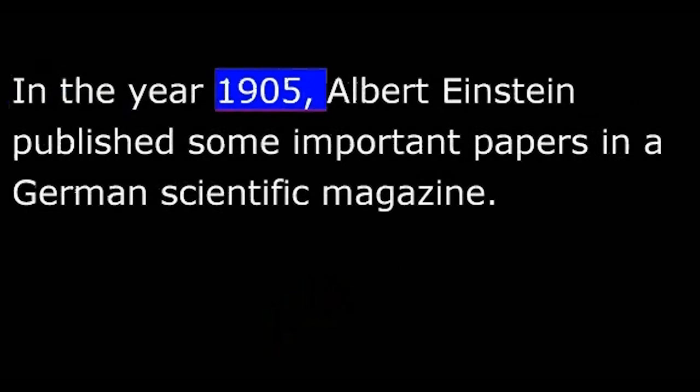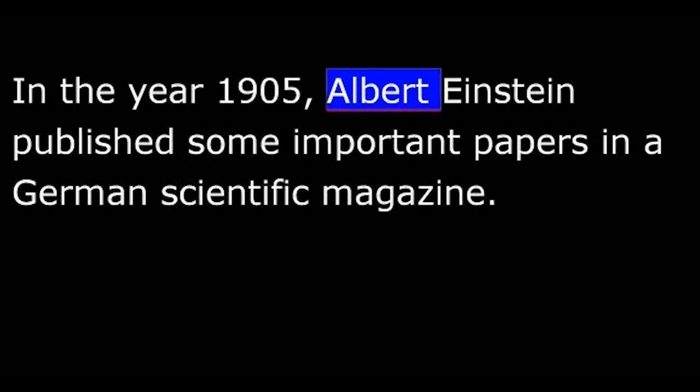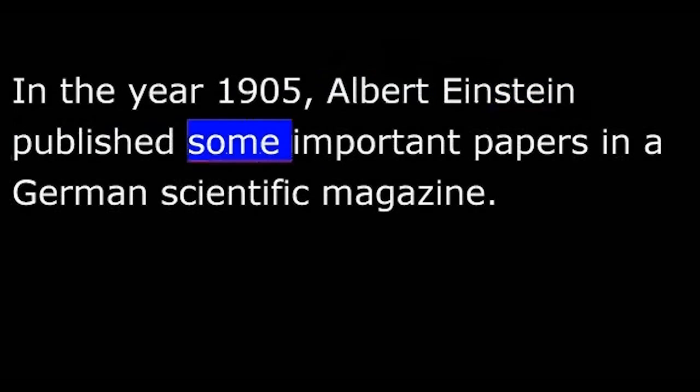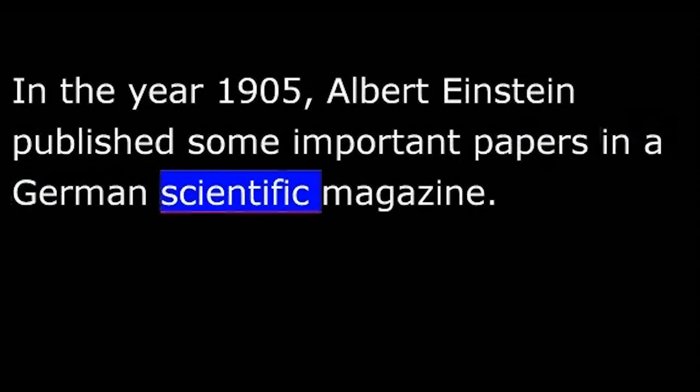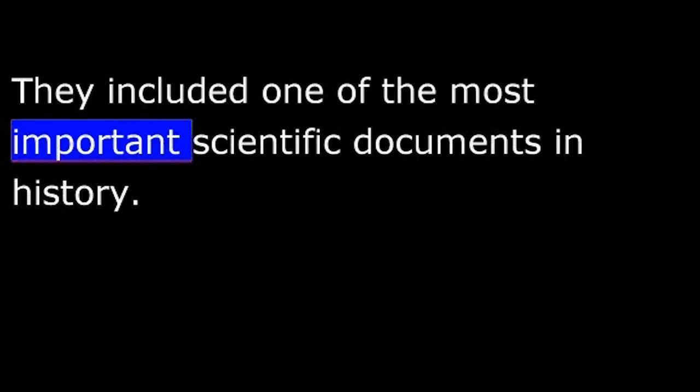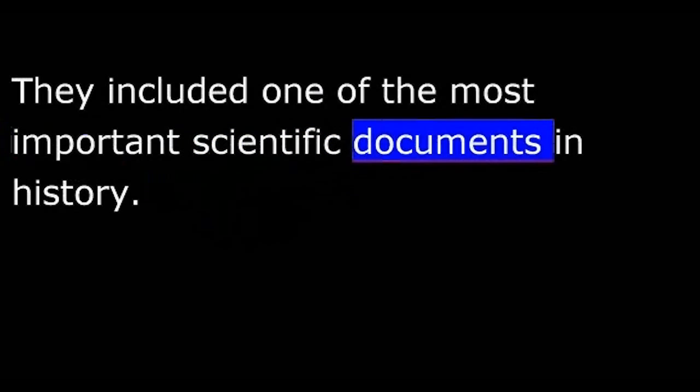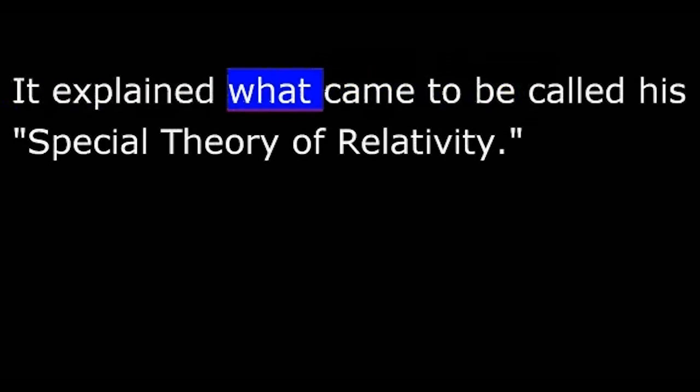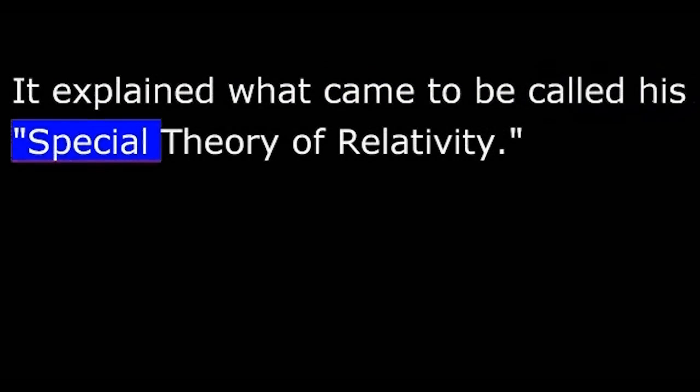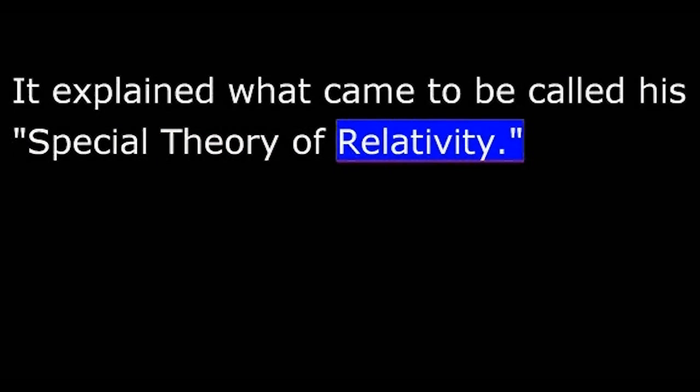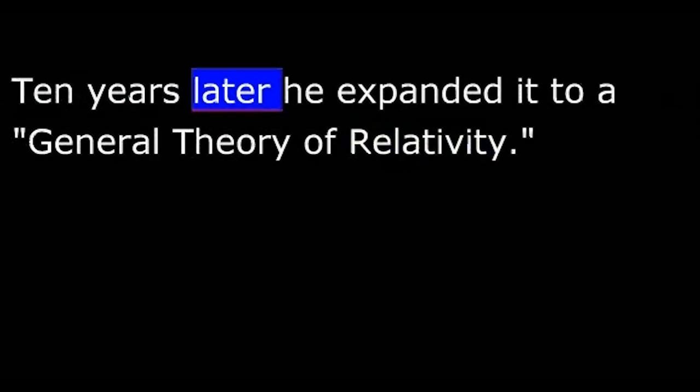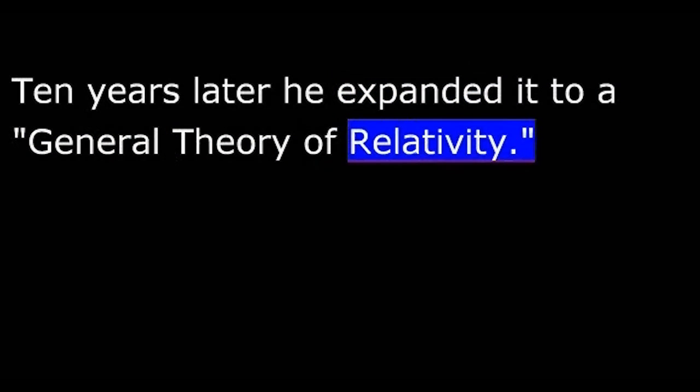In the year 1905, Albert Einstein published some important papers in a German scientific magazine. They included one of the most important scientific documents in history. It was filled with mathematics. It explained what came to be called his Special Theory of Relativity. Ten years later, he expanded it to a general theory of relativity.